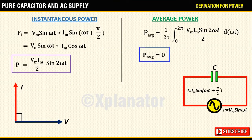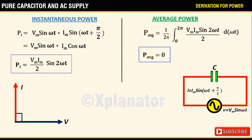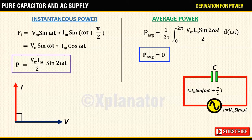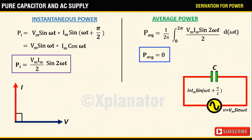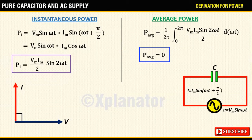That is because an ideal capacitor does not consume power. Energy is taken for one half cycle when the voltage or current increases and given back in the next half cycle when the values decrease.